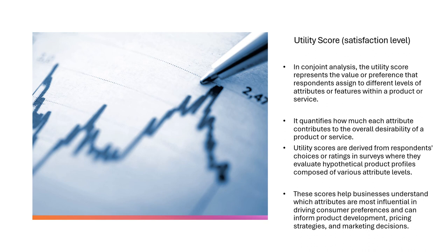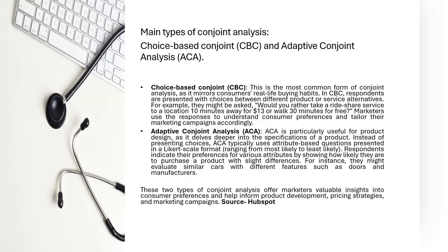These utility scores are derived from respondents' choices or ratings in the surveys you circulate, creating attribute levels. These scores help businesses understand which attribute is most influential in driving consumer preferences, informing product development, pricing strategy, and marketing decisions. There are two types of conjoint analysis: CBC (Choice-Based Conjoint) and ACA (Adaptive Conjoint Analysis).